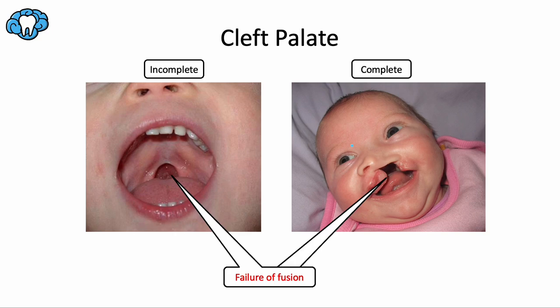Specific dental issues with cleft palate include rotated incisors. 20% of the time you're missing primary lateral incisors, and 50% of the time you're missing permanent lateral incisors — in the maxilla, since that's what cleft palate affects. 20% of the time maxillary canines become impacted. You frequently have posterior crossbite, supernumerary teeth, ectopic eruption, and decreased upper face height.